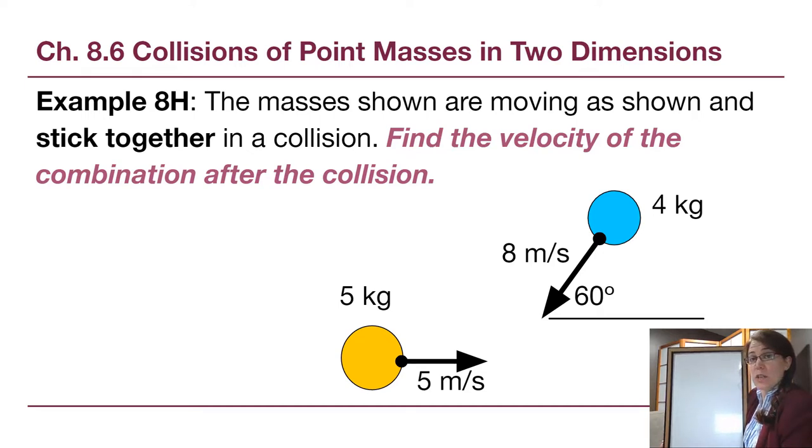All right, so this is the last fully worked example for chapter 8. It is the second of our two-dimensional collisions, and it's the one where we have objects that are both moving and they stick together at the end of the collision.